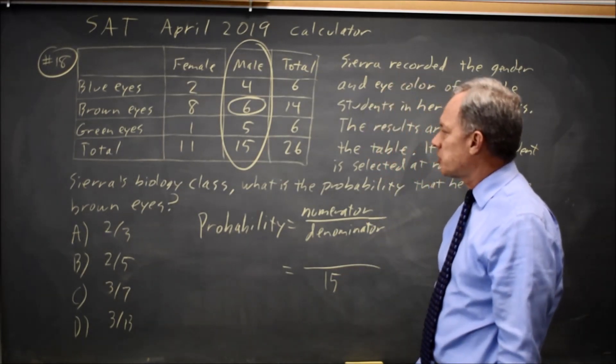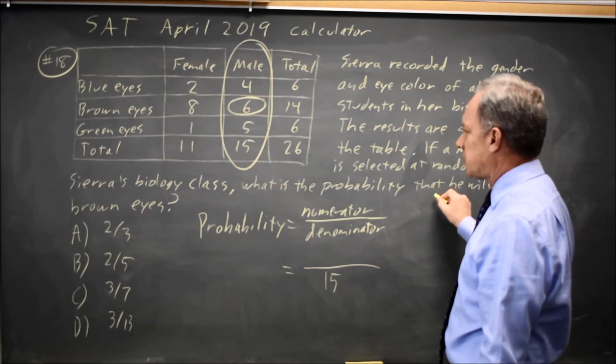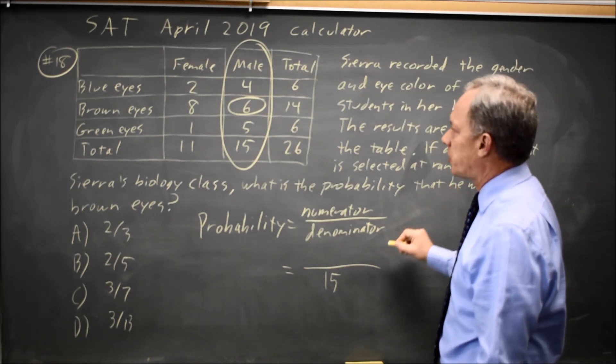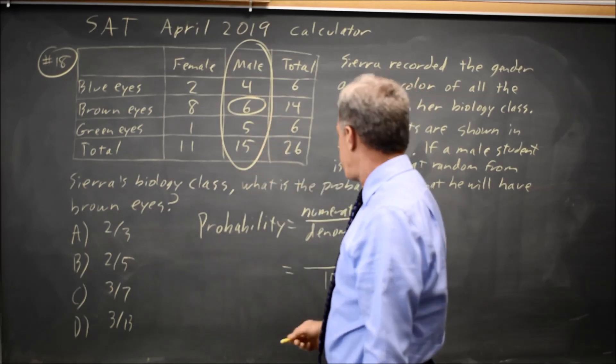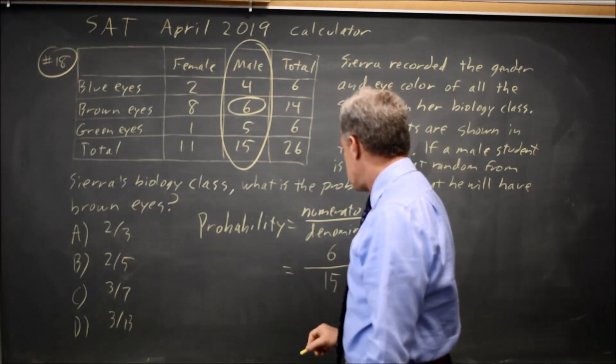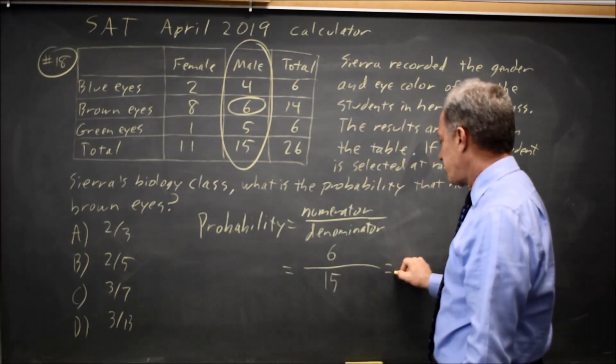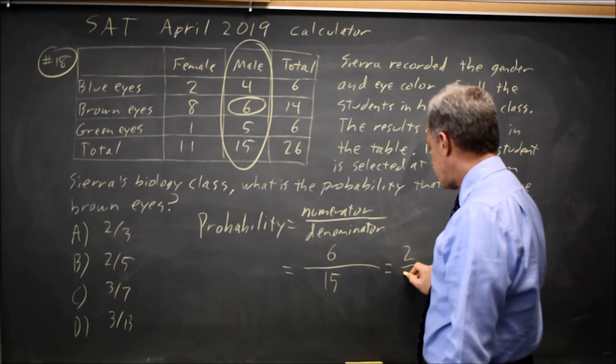And we want to know, given that it's one of those 15, what is the probability that this student will have brown eyes? So among the ones in the denominator, six of those 15 have brown eyes. So our probability is 6 over 15, which simplifies to 2 over 5.